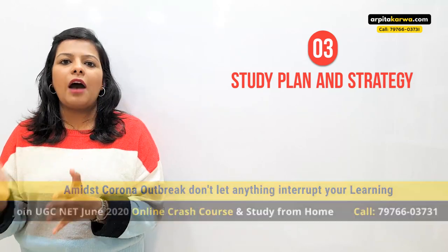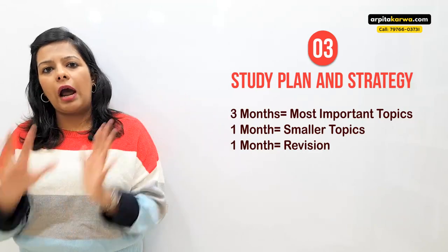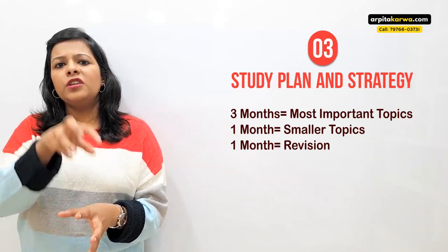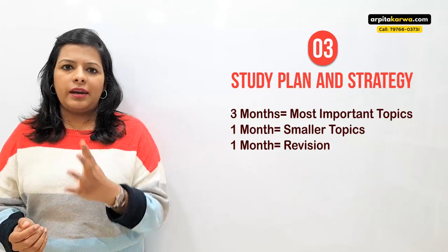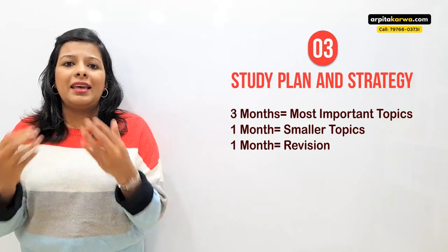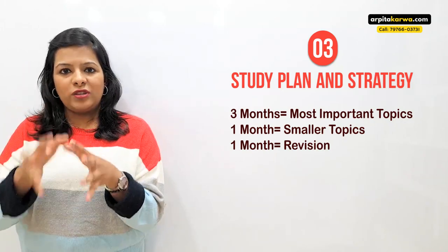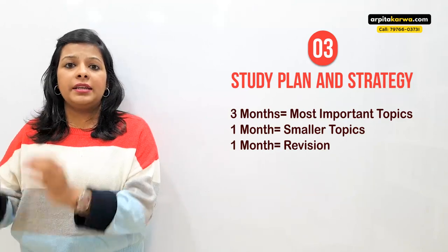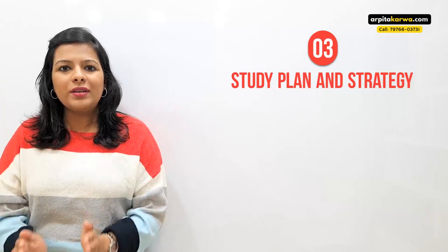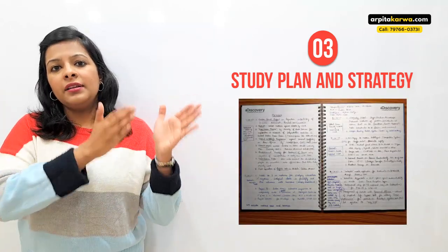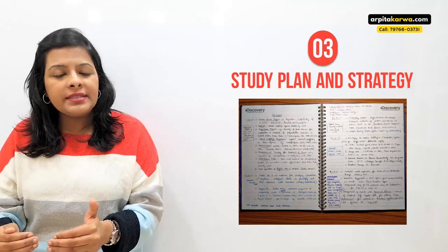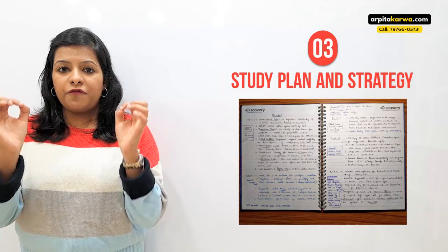After completing that portion, assess how much more time you have before the exam. If you have just one more month, start revising these three topics in detail. If you have around two months, devote one month to finishing a few smaller topics — for example, post-colonial literature or literary groups and movements — and use the remaining month for revision. One month before the exam, stop reading anything new and start focusing on the notes you've made from the audio lectures, revising each page consistently.